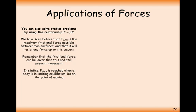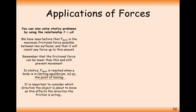In statics, where we have a particle in equilibrium, F max is reached when the body is in limiting equilibrium, i.e. on the point of moving. If it's on the point of moving, then any extra force applied in that direction will cause it to move, so maximum friction is applied in the opposite direction. It's important to consider which direction the object is about to move, as this affects the direction friction is acting.